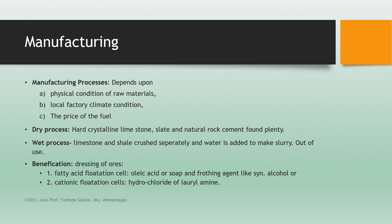The beneficiation process is nothing but the dressing of ores — unwanted materials are removed. There are two cells used for the beneficiation process. The first is the fatty acid flotation cell, which contains oleic acid or soap, and the frothing agent is synthetic alcohol. In this cell, calcareous (rich in calcium) and mica-rich materials are separated and concentrated. The second is the cationic flotation cell, where a hydrochloride of lauryl amine compound is used for separation of micaceous and lime-containing raw materials.